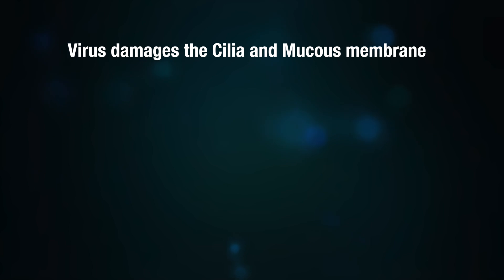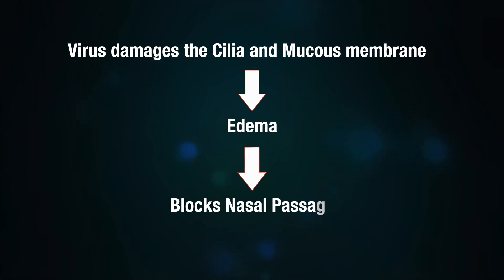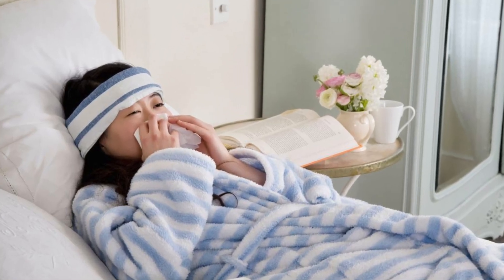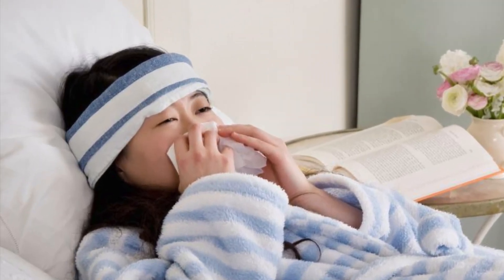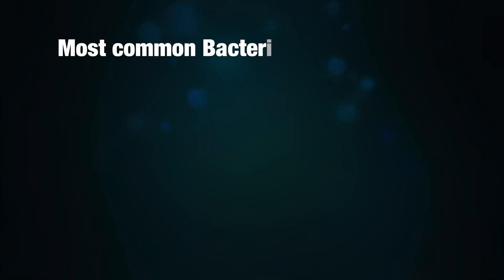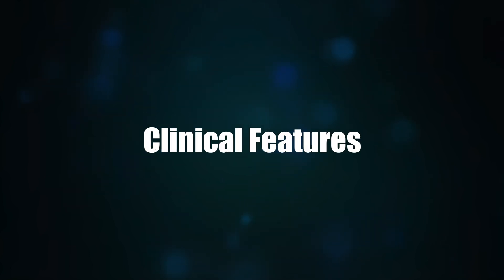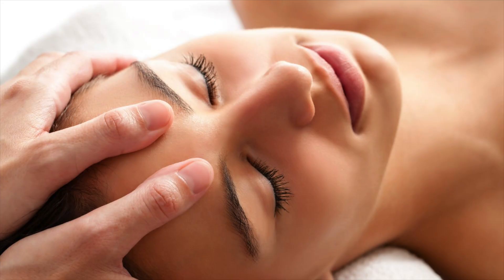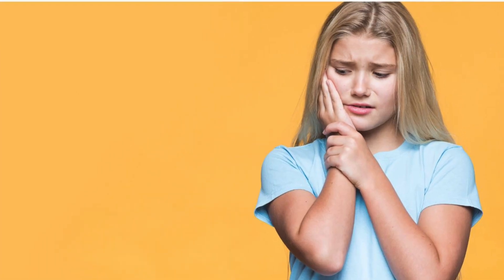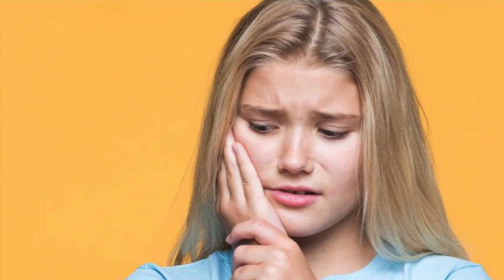Acute bacterial rhinosinusitis occurs when acute viral sinusitis is worsening. The virus damages the cilia and mucous membrane, causing edema, which in turn blocks the nasal passage. It usually follows after the patient has had a common cold and has not yet recovered. The most common bacteria responsible for rhinosinusitis are those displayed on screen.